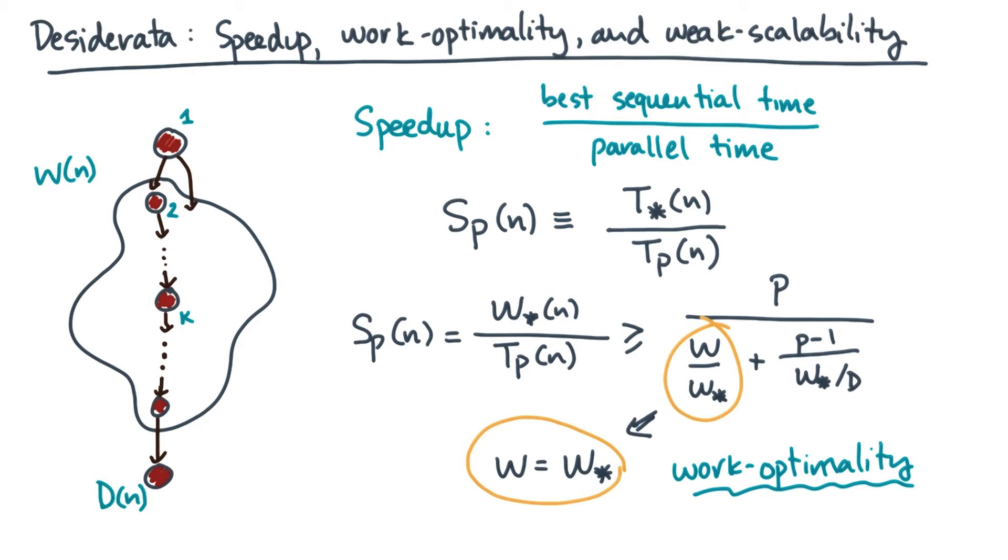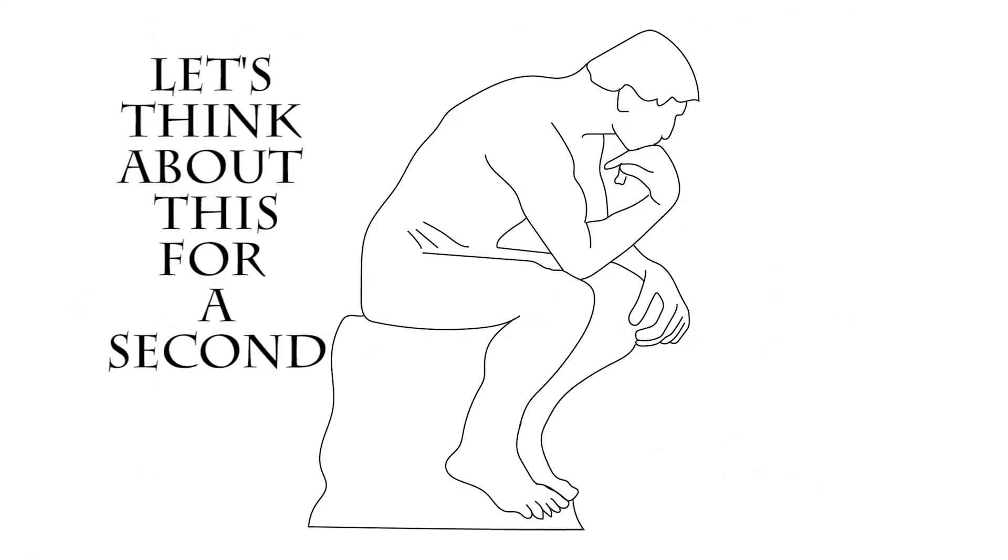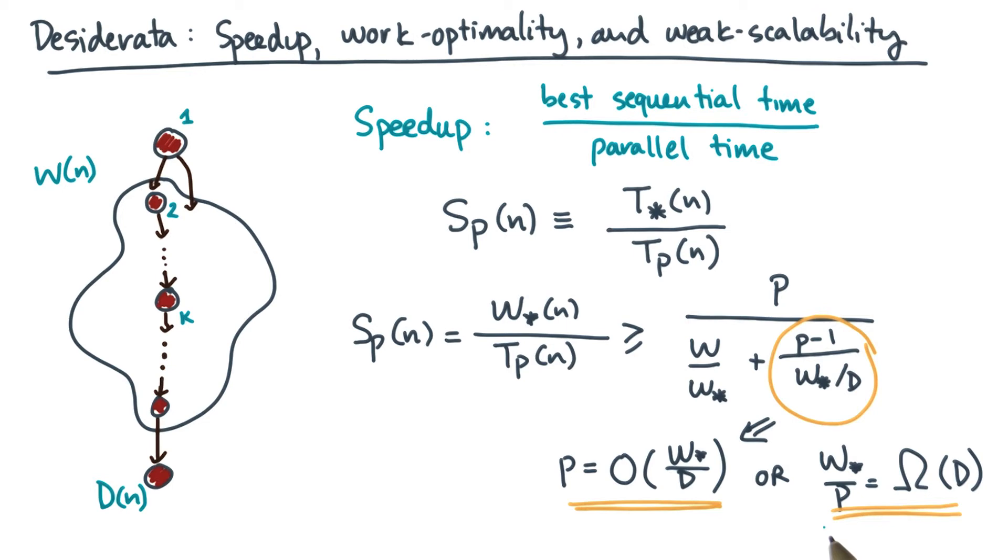Now let's look at the other term in the denominator. For this term to be constant, it essentially says that p should be proportional to w star over d. So this is similar to the idea of the average available parallelism. And the main difference is that we have a w star here instead of just w. Now there's another way to write this. This other way to write it is to say that w star divided by p has to be big omega of d. Let's think about this for a second. W star over p is basically the work per processor. This expression says that the work per processor has to grow, and in particular it has to grow proportional to the span. And the span, remember, depends on the problem size n. So in other words, this says that the work per processor has to grow as some function of n.